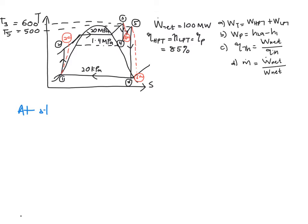So at state 1 it is given to you P1, 20 kilopascal, and that your temperature—sorry, it is not temperature—you know that the condition of your H1 is actually your Hf. So since given to you pressure, therefore you will need to read from your table A5.